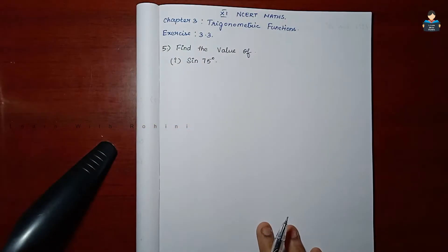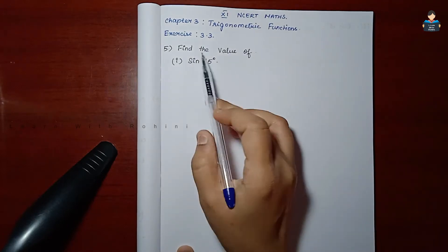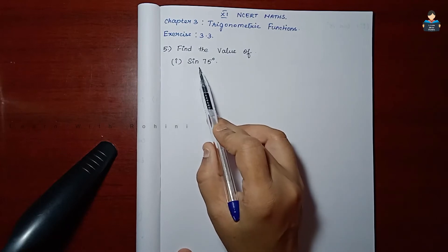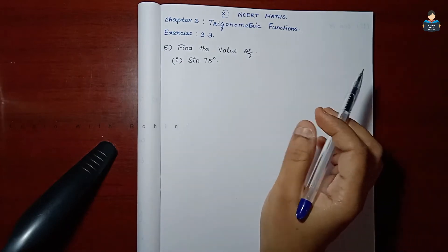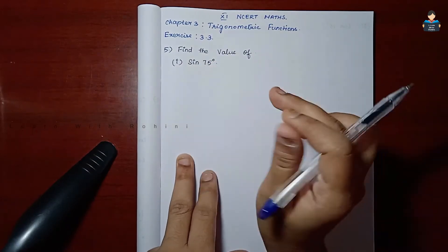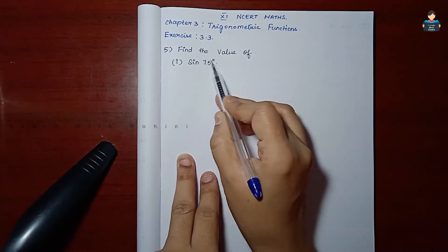Hello everyone, welcome to our channel. In this video, Chapter 3 Trigonometric Functions, Exercise 3.3, 5th sum: find the value of sin 75 degrees. This is the first subdivision.